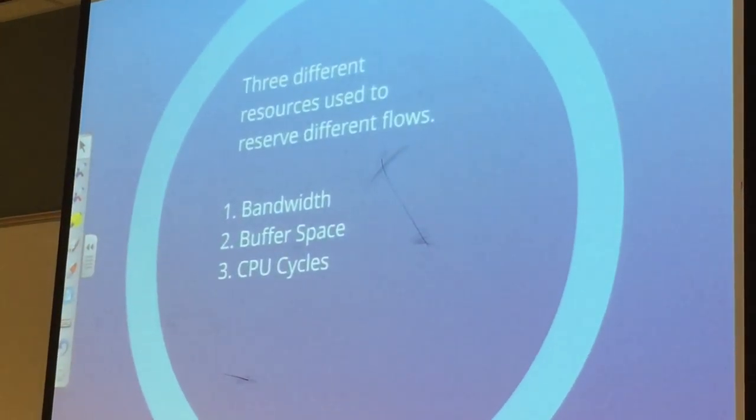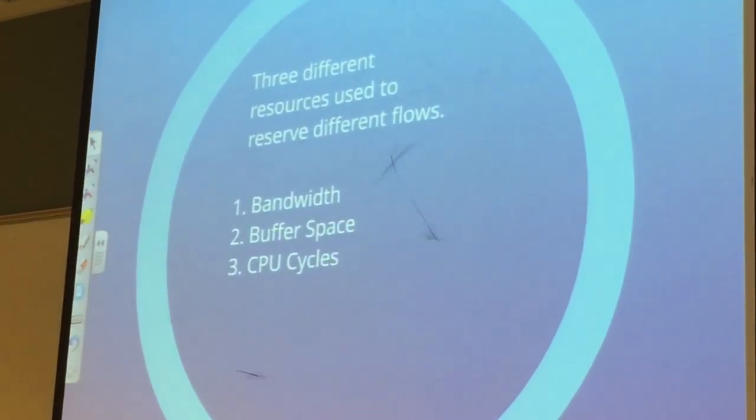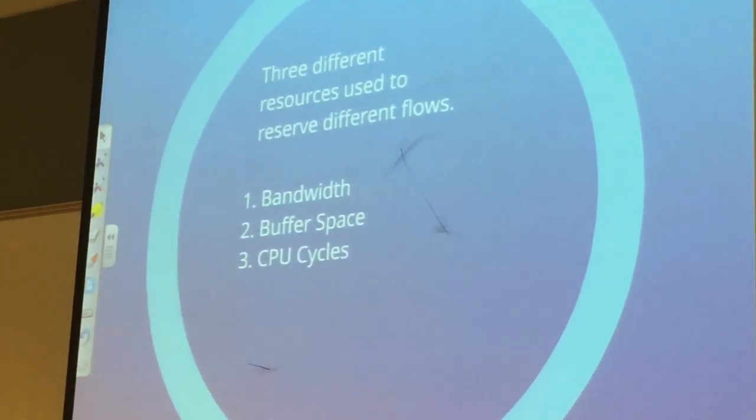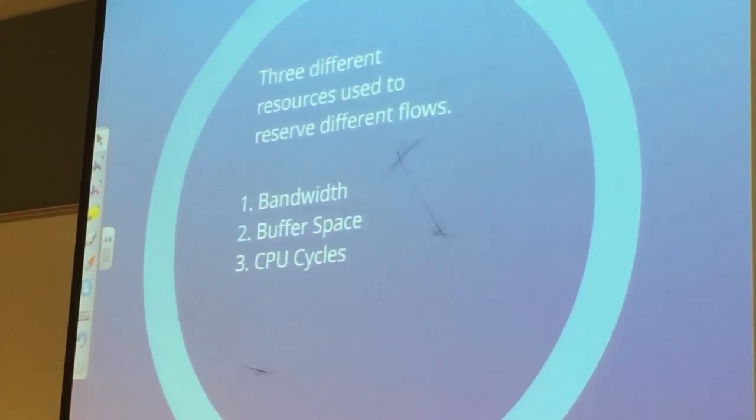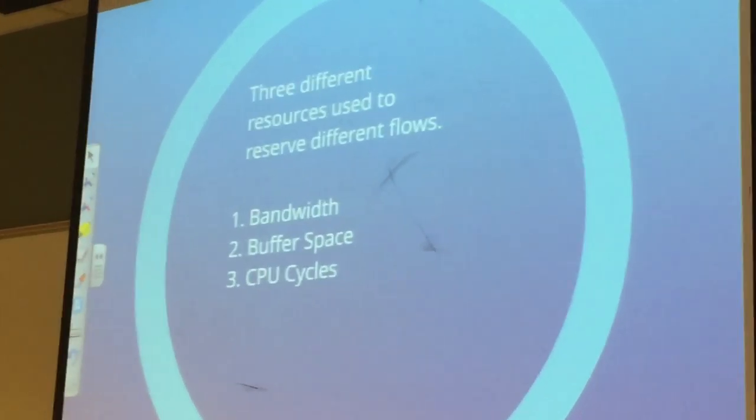There are three different resources used to reserve different flows. The first one being bandwidth, the second is buffer space, and the third one is CPU cycles.